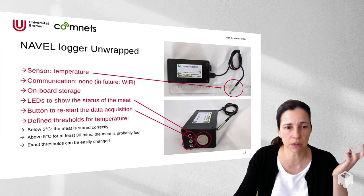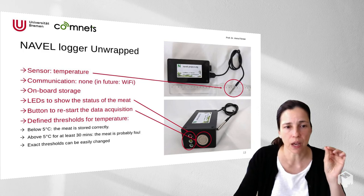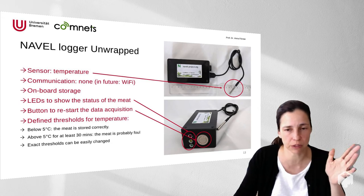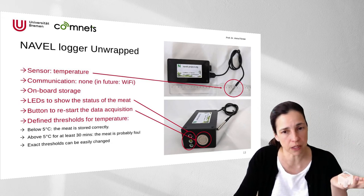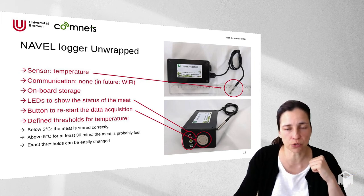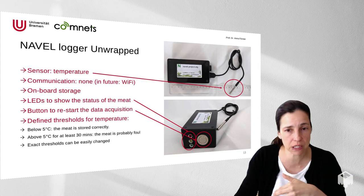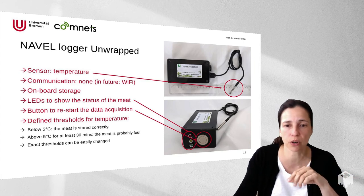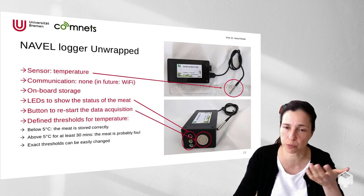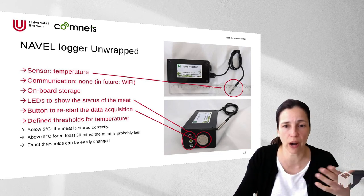The rules are very simple: if the temperature is below 5 degrees Celsius, everything is fine and the green LED flashes. If it is above 5 degrees for some time — not just a single reading but for around 30 minutes — then the meat is probably compromised and the red LED goes on, signaling to the receiver that there may be a problem. The exact threshold can be easily changed by reprogramming the device with a laptop, for example if you're transporting fruit or vegetables that require different temperatures.